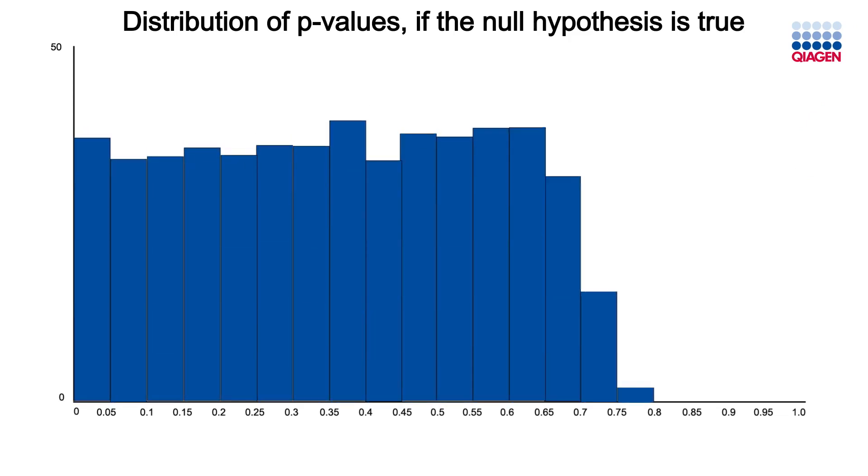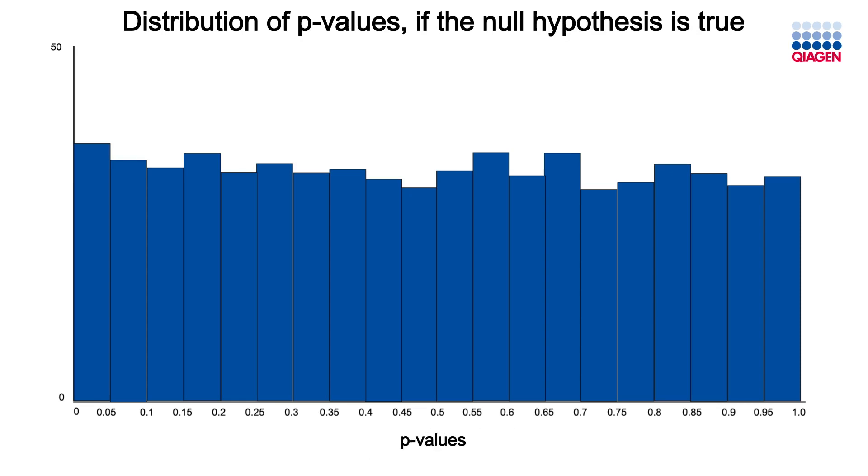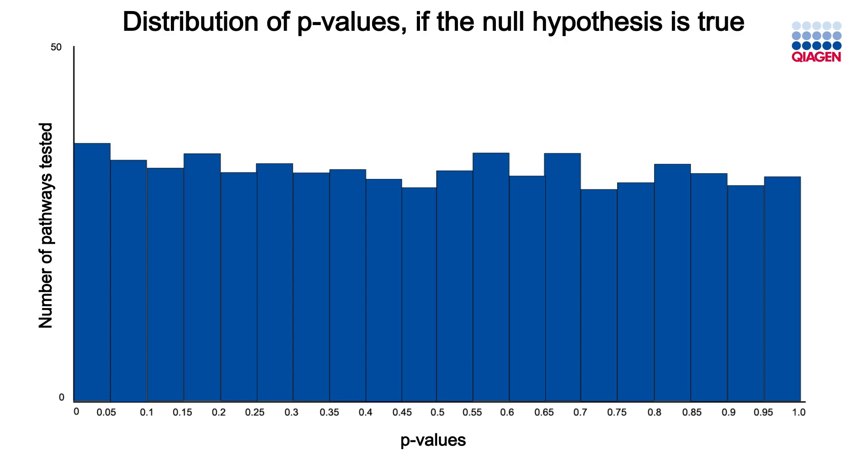We can also view the p-values as a histogram. Here, the x-axis represents all the possible p-values ranging from 0 to 1. And we can distribute the p-values so that each bar in the x-axis contains 5% of all the p-values. And each bar has a width of 0.05. The y-axis shows the number of times that a pathway's p-value appeared in each bar. Notice that when there is no true difference between the groups of mice, the number of p-values is evenly distributed, with an approximately equal number of pathways represented in each bar. There is an equal probability that an experiment's p-value would fall into any one of these bars. In this example, 38 p-values are in the 0.05 bar. This means that we've identified 38 false positive results out of the 750 tests when using an alpha of 0.05. The remaining 712 pathways are true negatives.